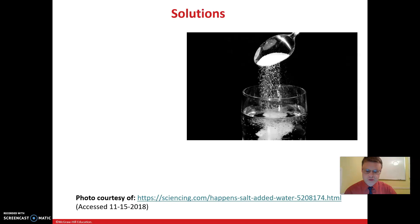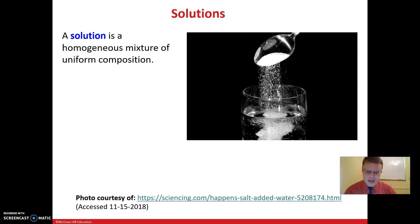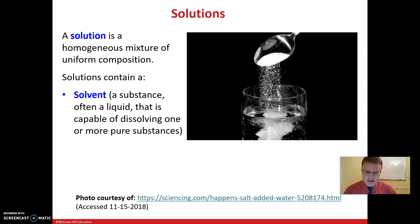A solution is a homogeneous mixture with uniform composition. We have more than one substance in a solution, but it's homogeneous throughout. It contains a couple of important parts: one is the solvent, which is a liquid capable of dissolving other substances. We would usually consider the solvent the major component of a solution.